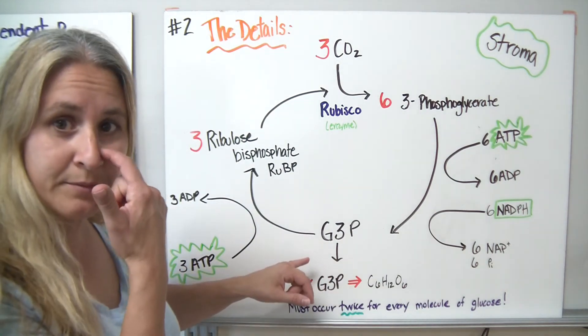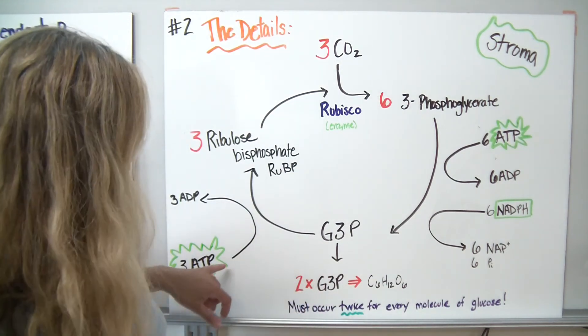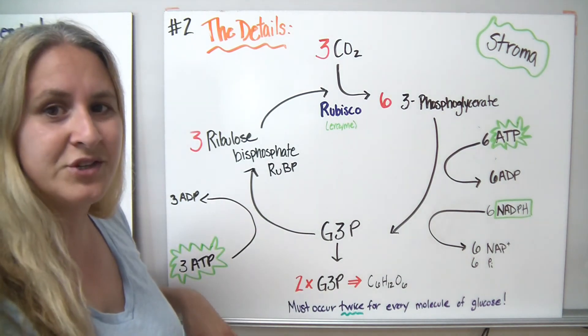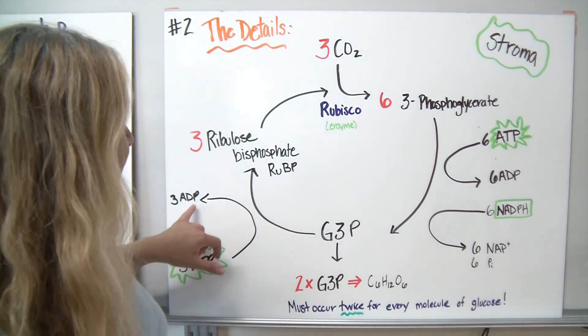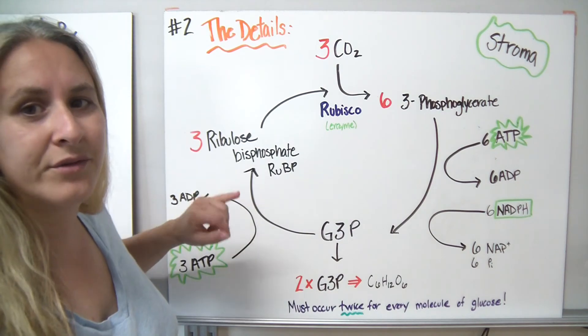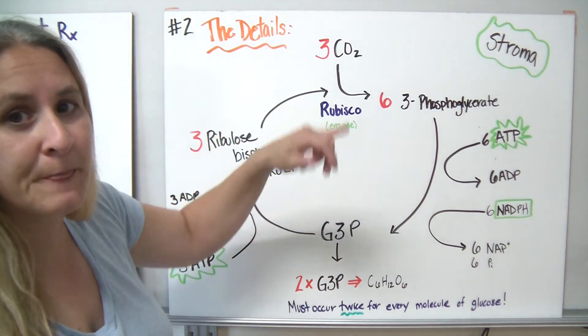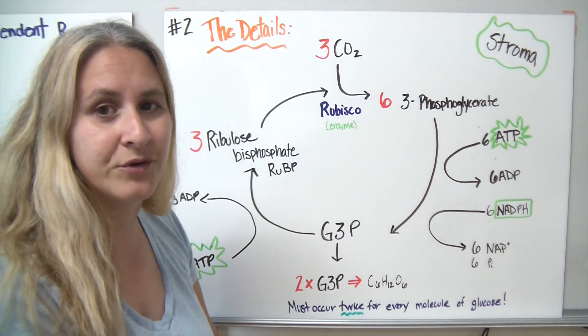Now, we can recycle some products from this reaction, and we can take our ATP and turn it into ADP again in order to recycle our 3-ribulose phosphate so the cycle can happen over and over again.